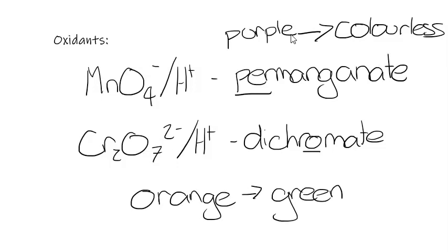The reason we need to remember the colours that these reagents turn is because we might get a question that tells us that we've got two solutions, two unknown solutions. One might be an alcohol and one might be an alkane. We're going to learn very soon that an alcohol can be oxidised. So if we were to add permanganate to both of those solutions, we would see that one of the solutions turns from purple to colourless, and the other solution would stay purple.